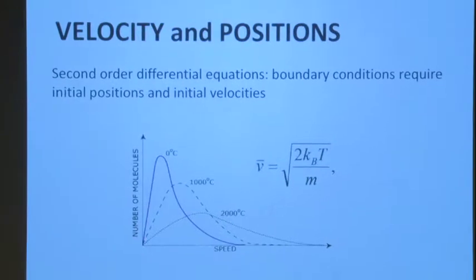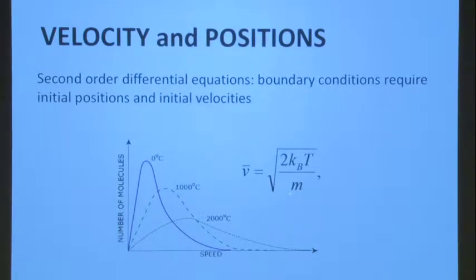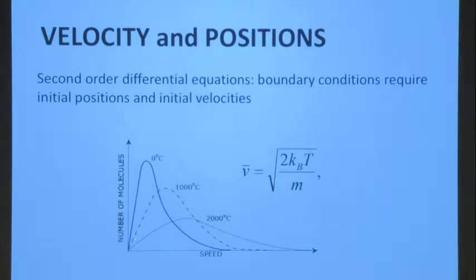You also need velocity — you need to know how they are initially moving, and that's a function of temperature. This is the Boltzmann distribution. If you have a number of molecules, as a function of temperature you have an average velocity that changes. Using the Boltzmann constant k_B, the temperature T, and the mass m, you can see how speed changes with temperature — from lower temperatures like 300 K up to 1000–2000°C. That's something you assign to the atoms initially.